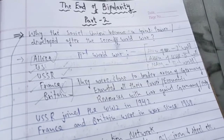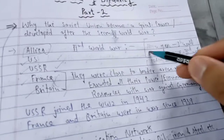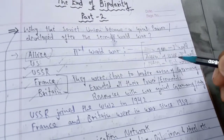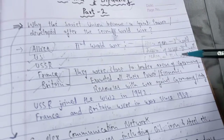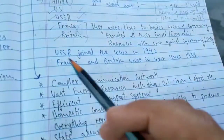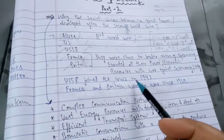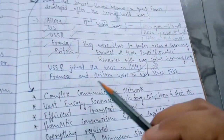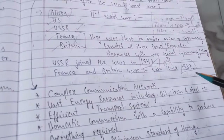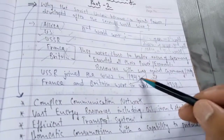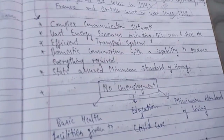The USSR only joined the Second World War in 1942 and fought for around two to three years, which meant its economic and power resources remained largely intact. That is why after the war, the US was the most powerful nation, but the USSR was its main competition. Also note: countries supporting the US were called First World countries, supporters of the USSR were Second World countries, and the Non-Aligned Movement nations were Third World countries.